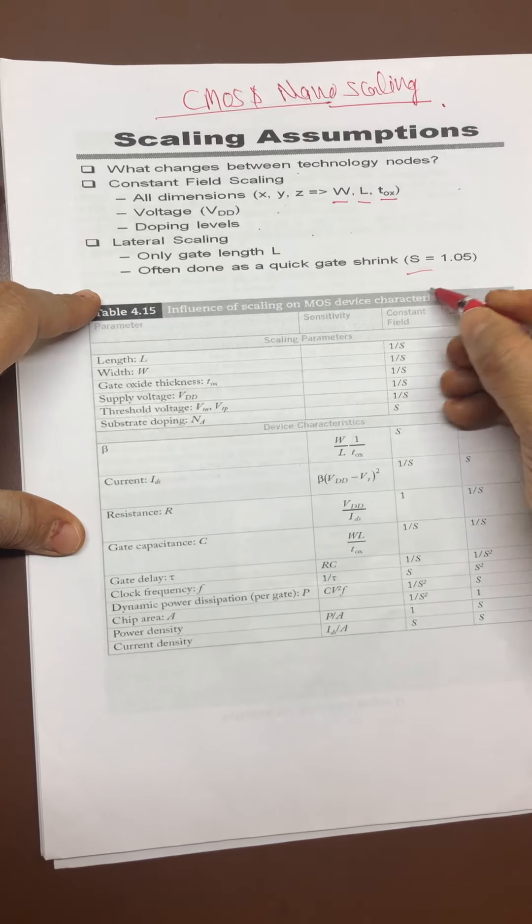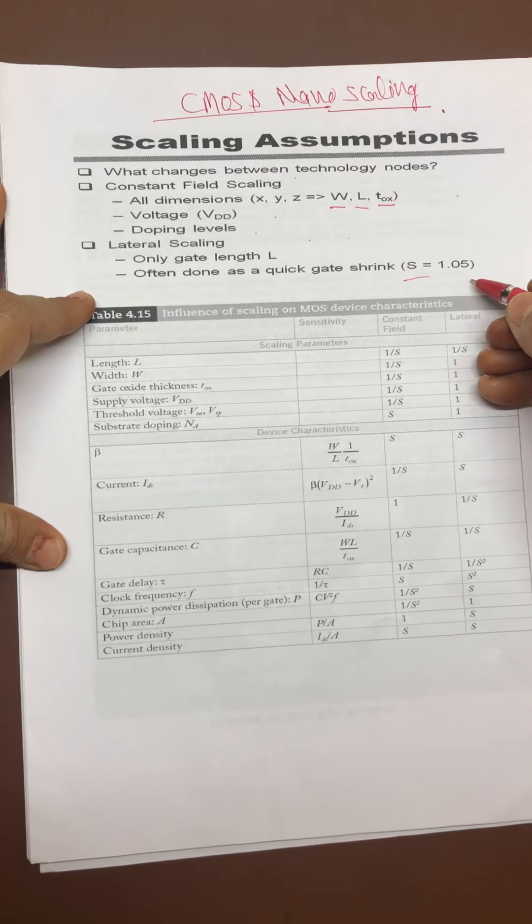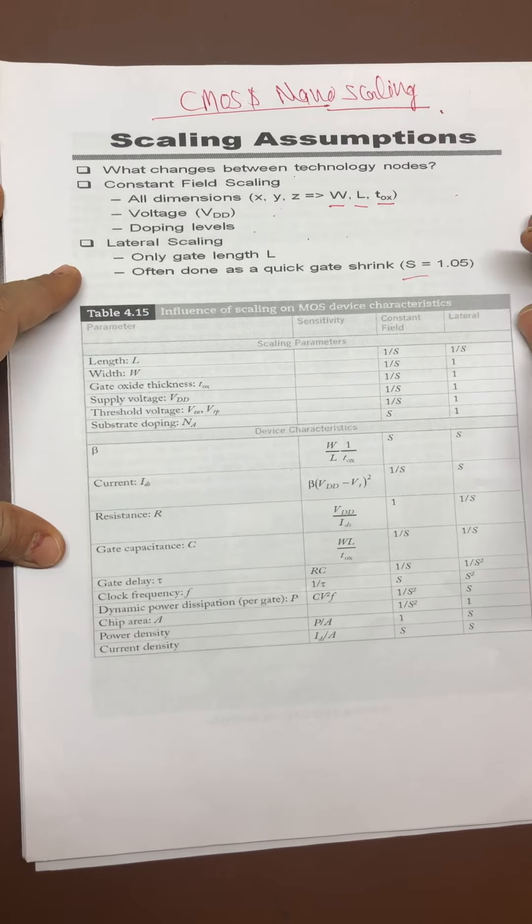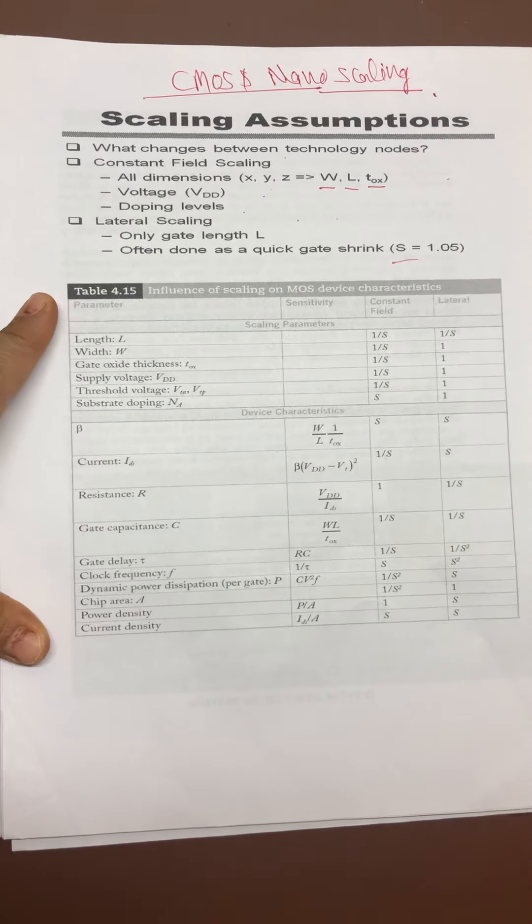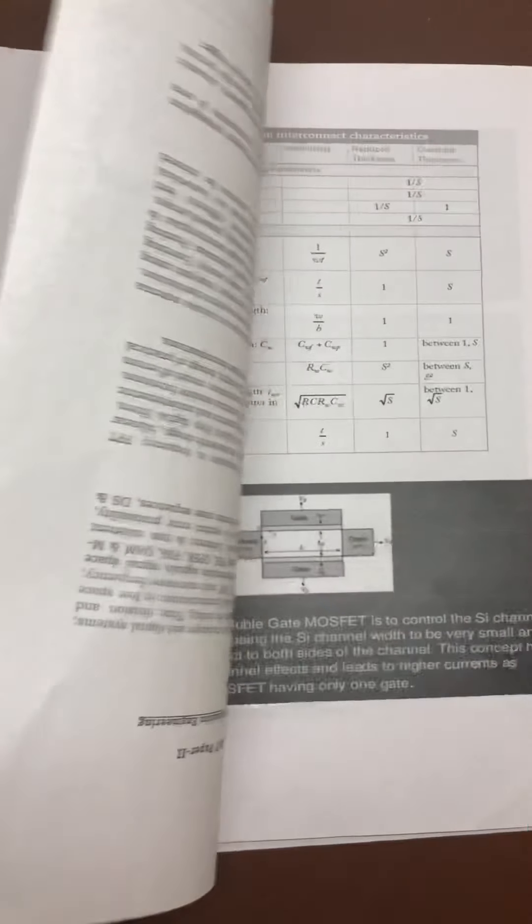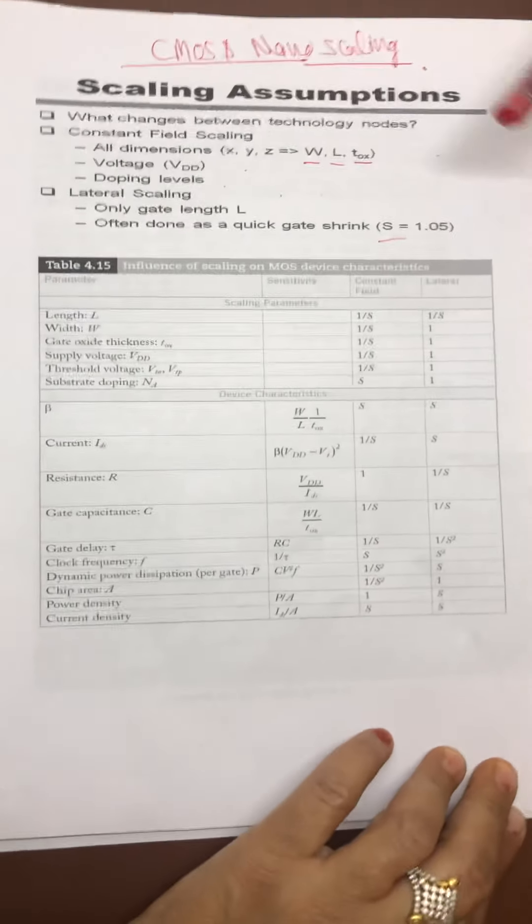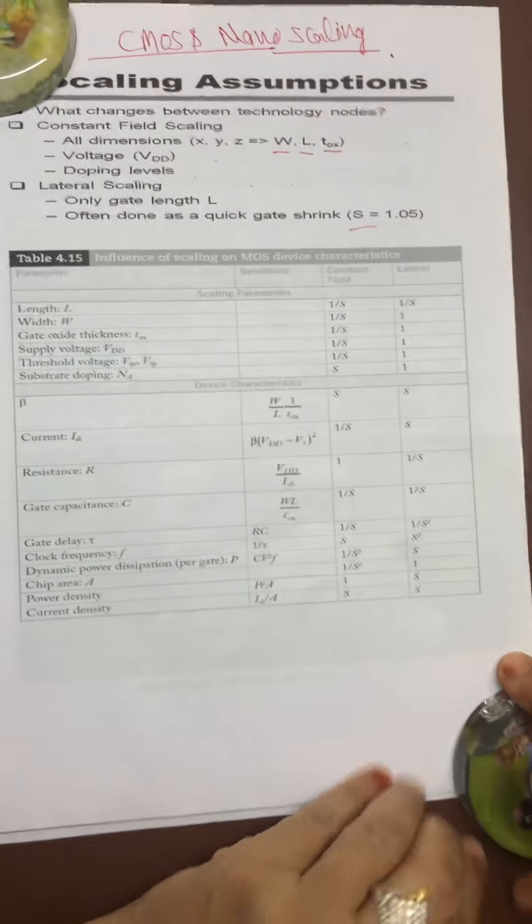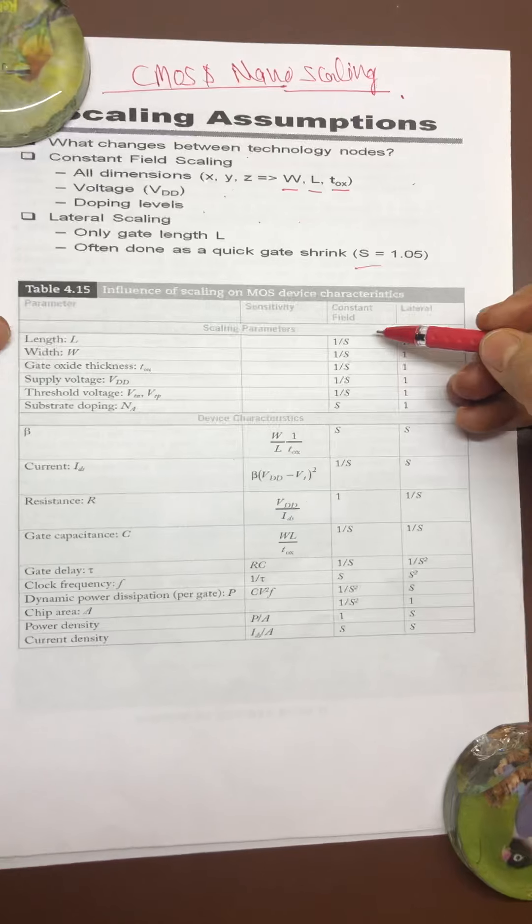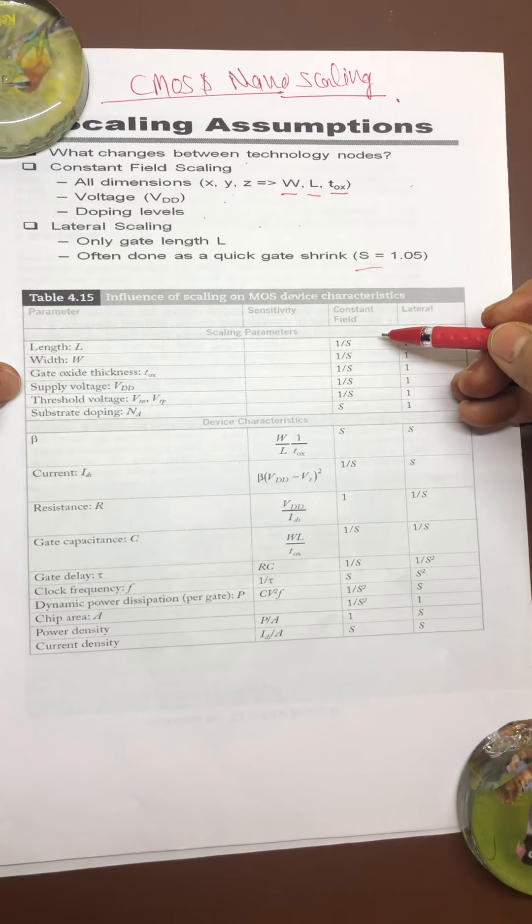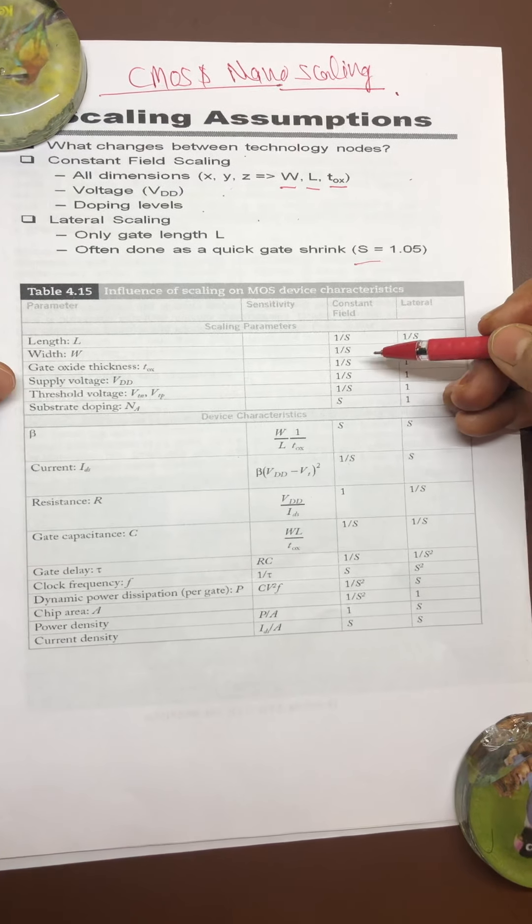Now this table is a summary table with respect to the scaling. Mainly scaling parameters are length, width, gate oxide thickness T_OX, supply voltage V_DD, threshold voltage V_T and V_TP, and substrate doping N_A.